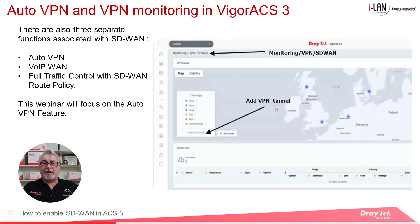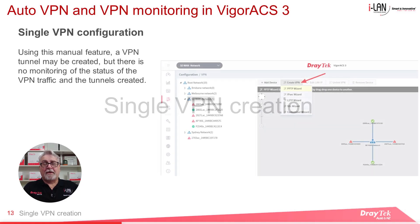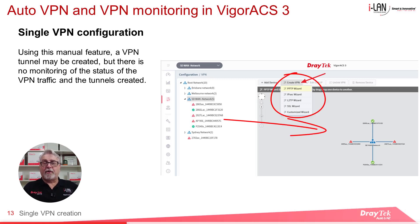Before looking at SD-WAN VPN options, let's look at a simple way to create a single VPN between two routers using ACS3. By default IPsec tunnels will be created, but the encryption type can be changed using advanced settings. Whether they're SD-WAN or non-SD-WAN routers, ACS3 makes it dead easy — just drag a router to the right-hand pane, select an encryption type, and draw a line to the router you'd like to connect. ACS3 then automatically pushes the configurations to the routers.